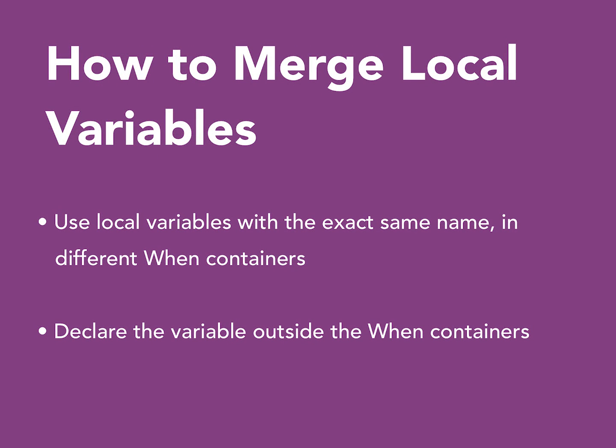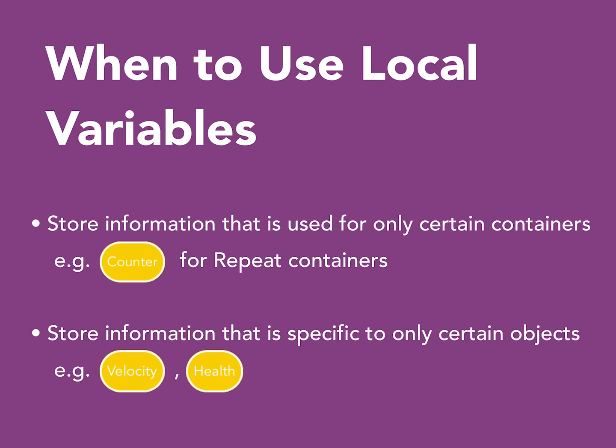As a summary, to merge local variables, you can set them to have the same name and then declare the variable outside the When containers. When do you use local variables versus other variables? If you want variables to exist only for a specific object or within a specific container, you can create a local variable. For example, you can use local variables when working with repeat containers and need a variable that will mainly be used only for that repeat container, like a counter. You can also use local variables to store information on things such as velocity, health, and other information that is specific to just certain objects and not all objects in the project.